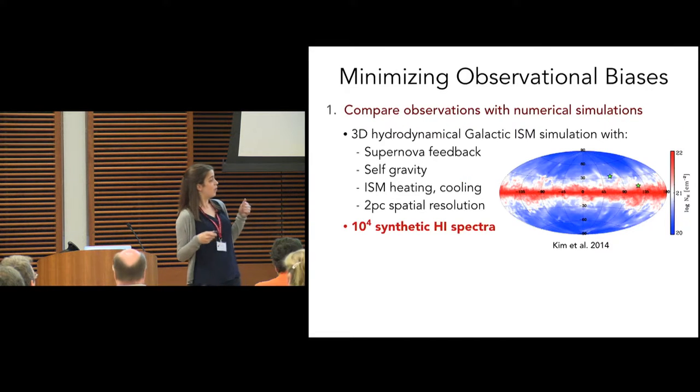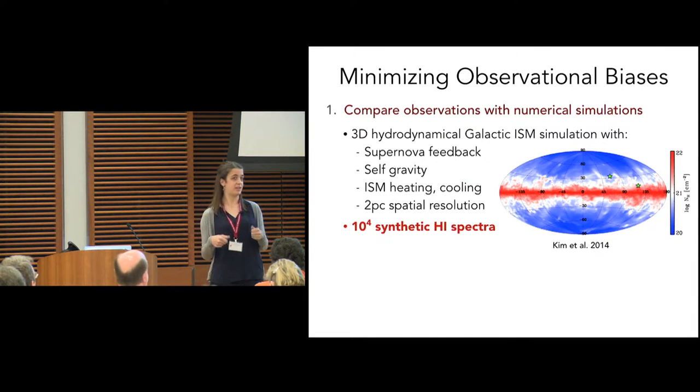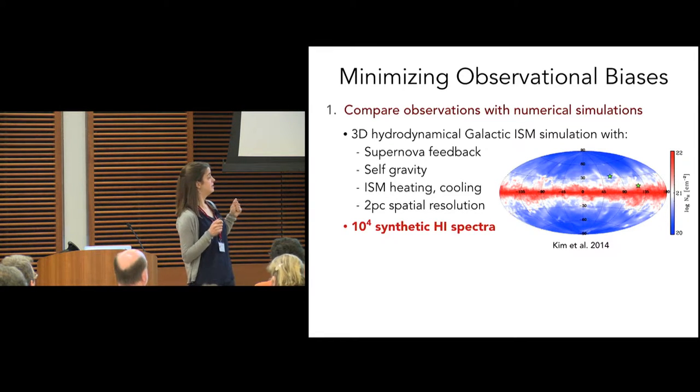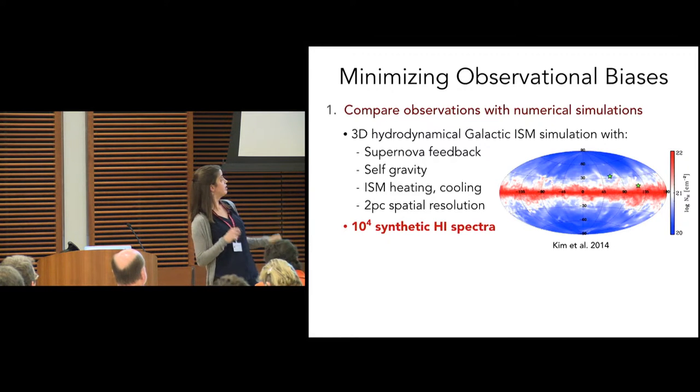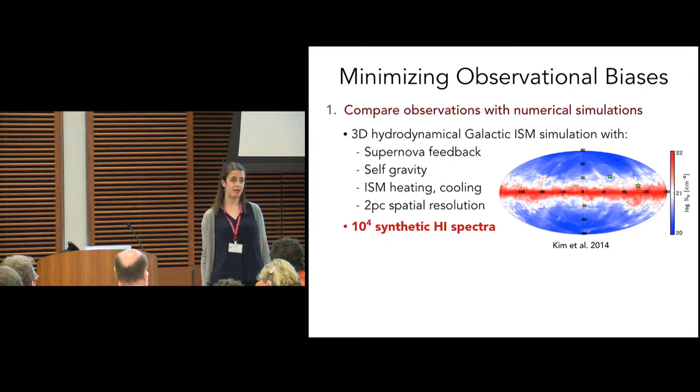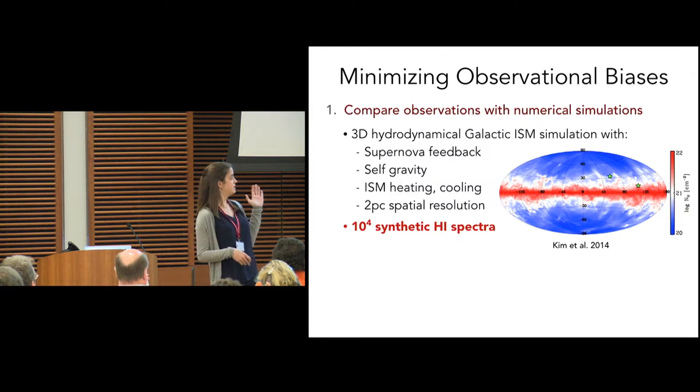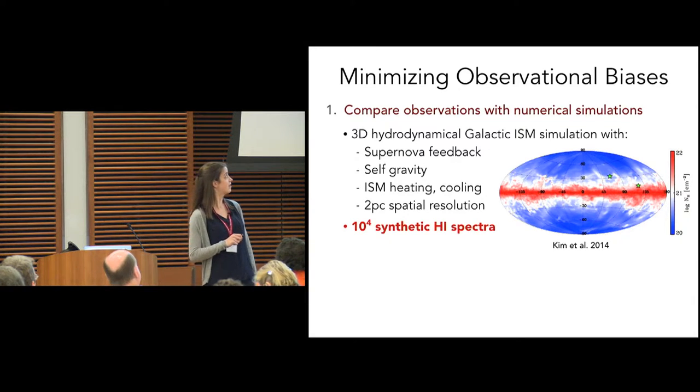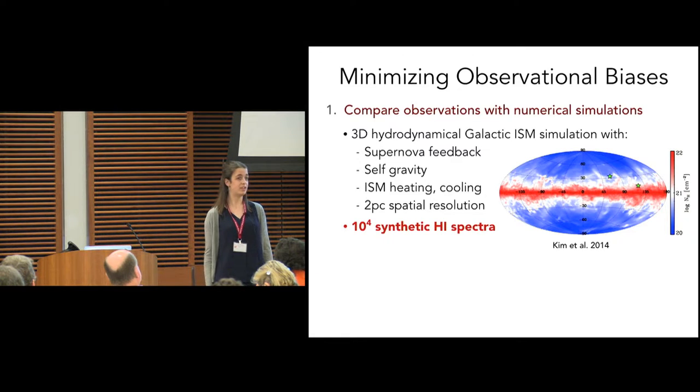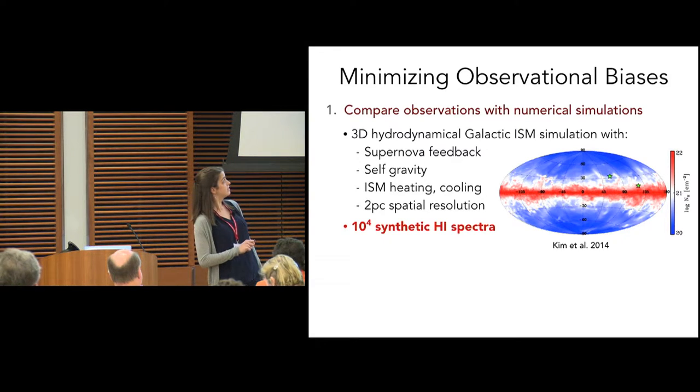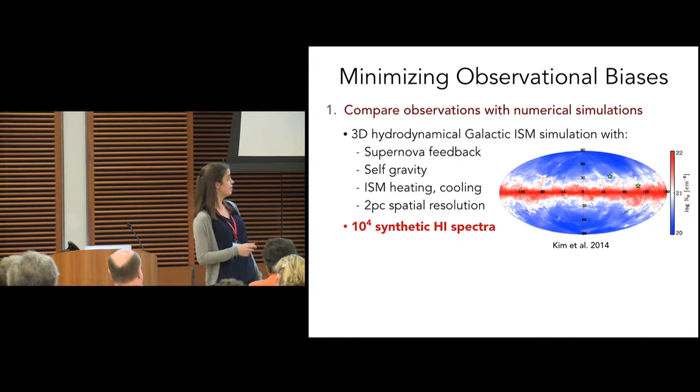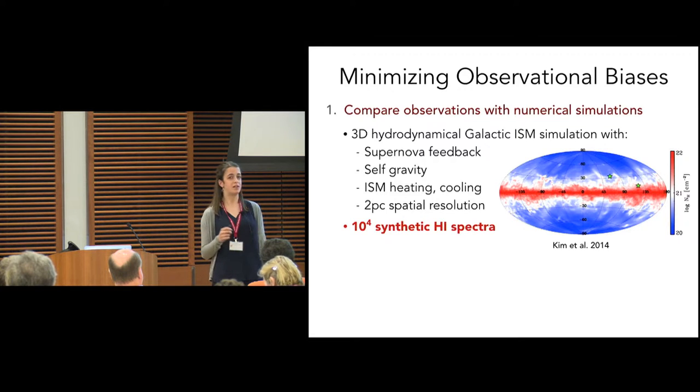To get at why we're missing this stuff, we wanted to make sure that we minimize our observational biases. One way to do that is to compare our data more directly with numerical simulations. The one we chose is this 3D hydrodynamic galactic ISM simulation from Kim et al. They've got all kinds of nice ingredients for simulations. The thing that made us very excited was that they produced a catalog of 10,000 synthetic H1 emission and absorption spectral line pairs. So we can use this synthetic data to compare directly with our observations. However, 10 to the 4 spectra is a lot, especially if you're decomposing them by hand. As a graduate student, I can tell you it takes a long time.